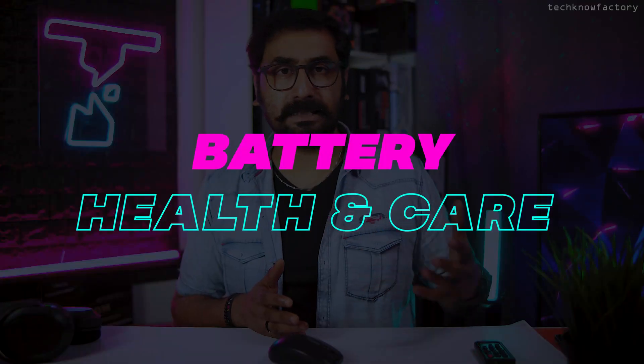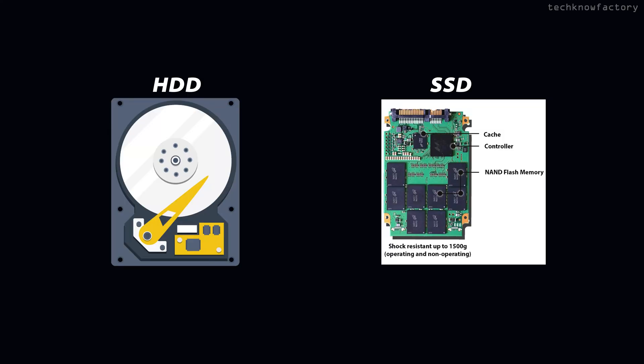Now for battery maintenance. If your laptop has a backup and the battery is healthy, we want to maintain it. First, if you have a mechanical hard drive, upgrade to an SSD — because a mechanical hard drive is a spinning disk and is one of the biggest battery-draining components. Switching to an SSD significantly reduces battery consumption.